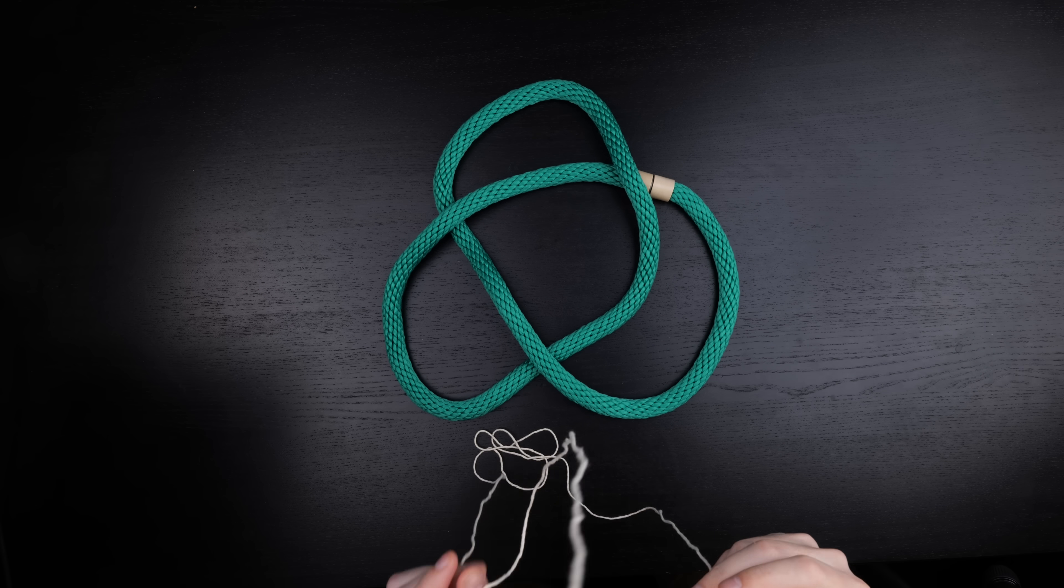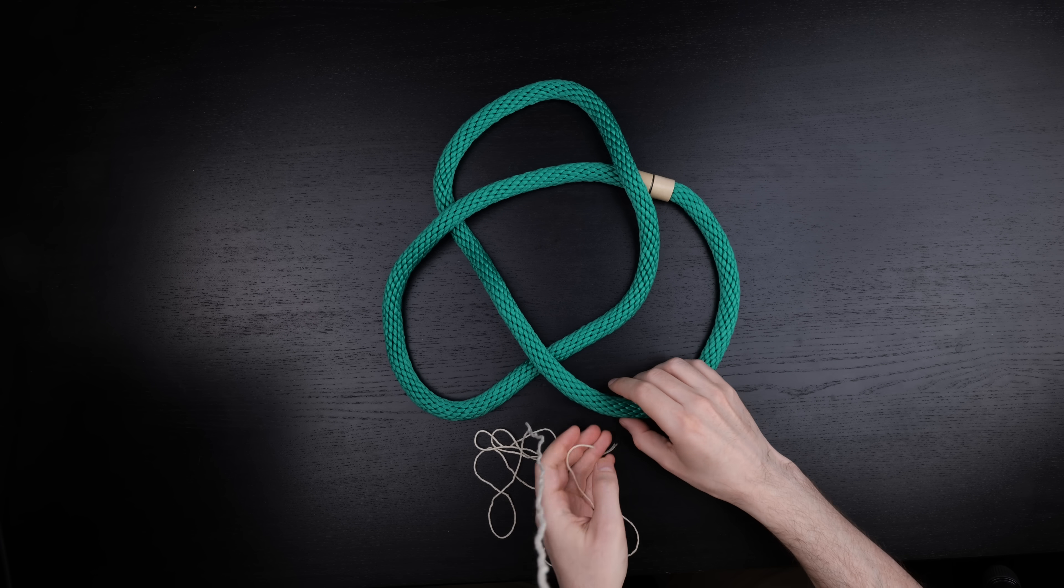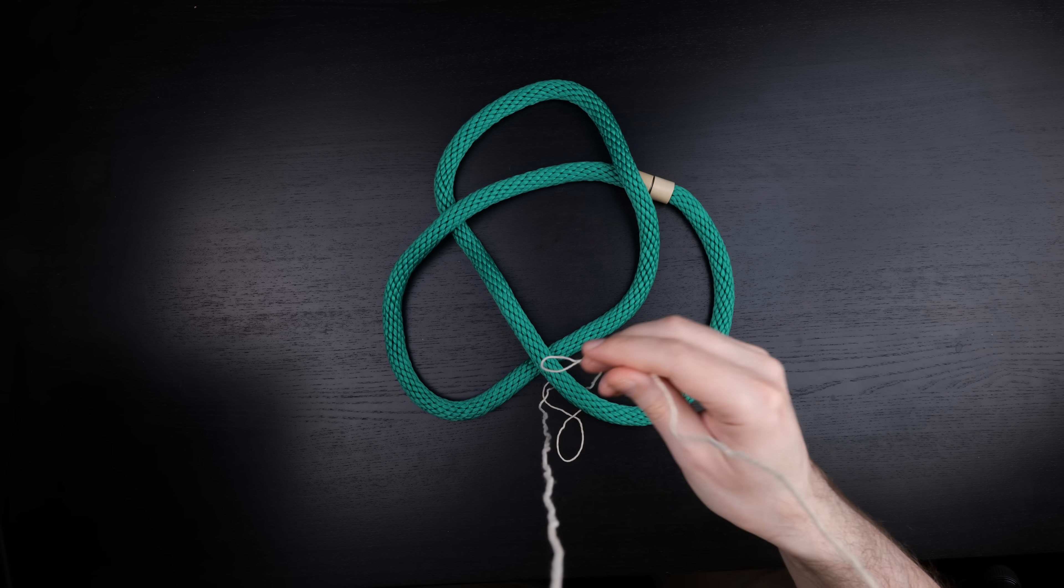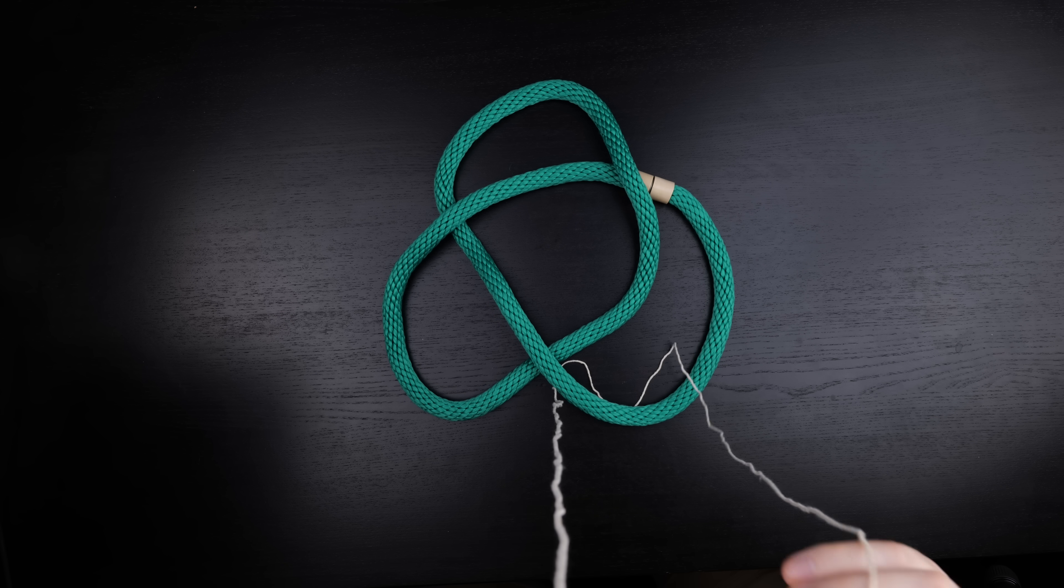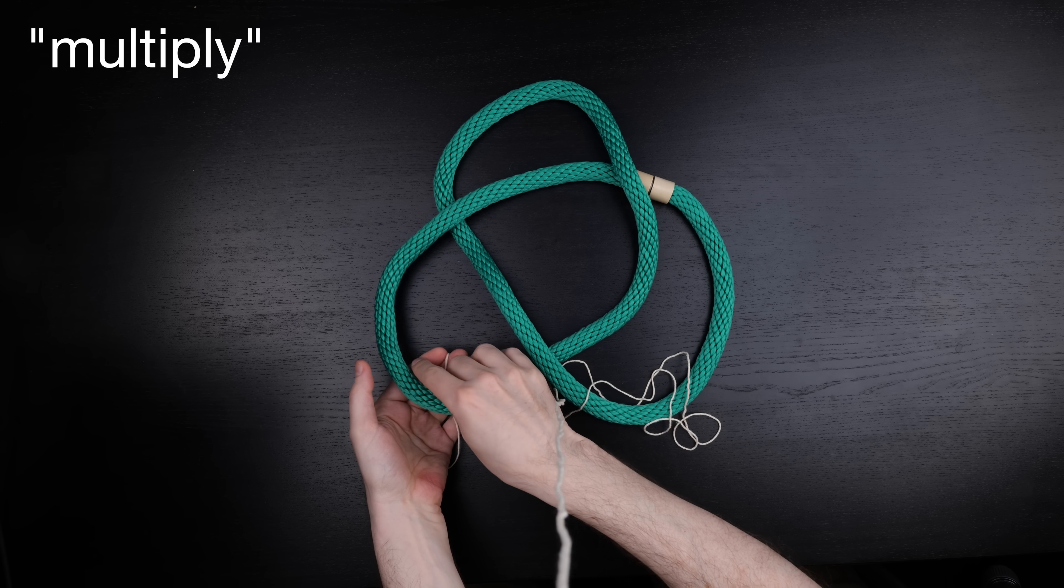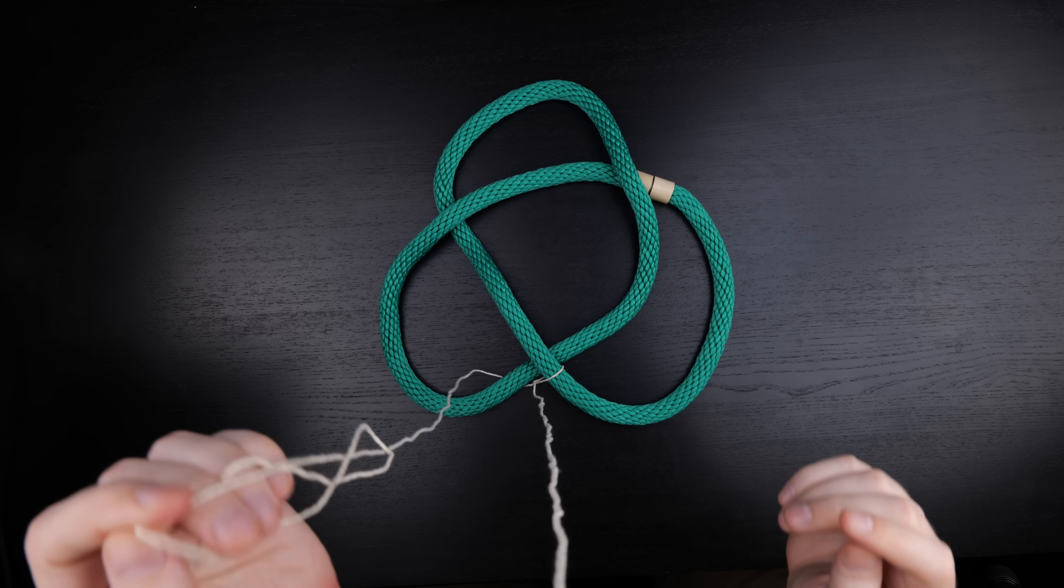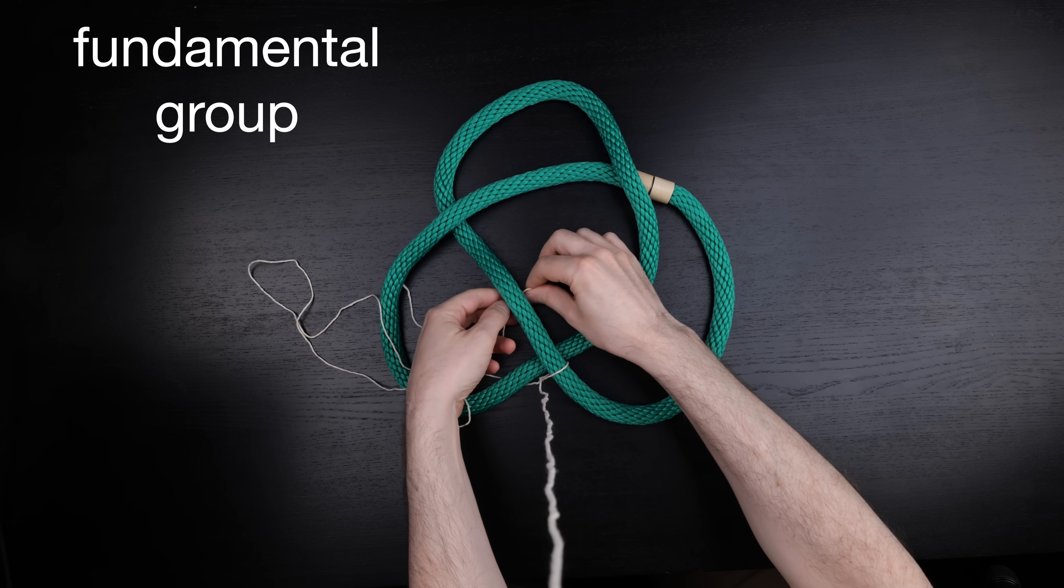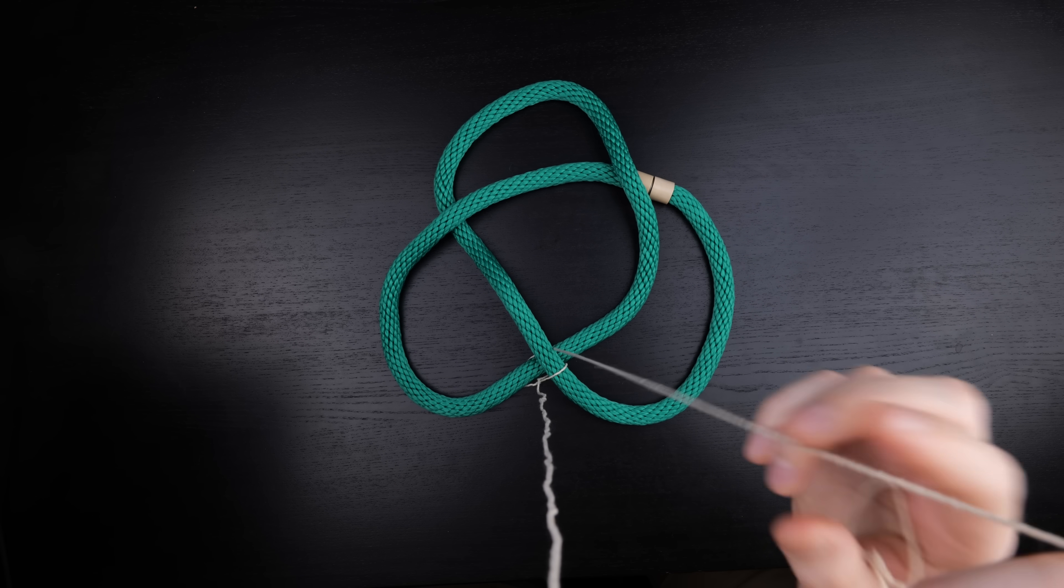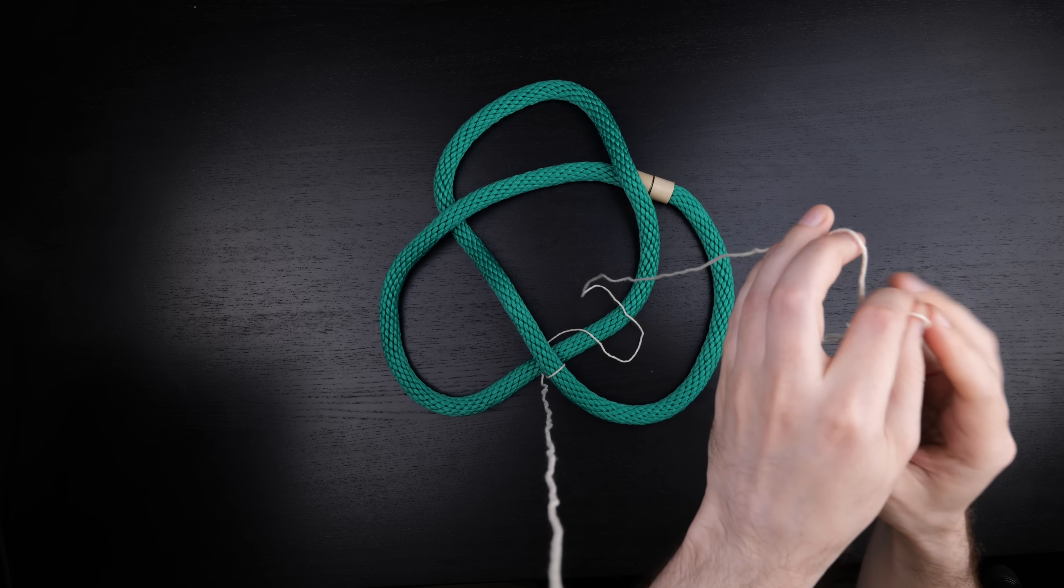But there's another, more technical way to think about tri-colourability. Rather than colouring the strands, you think about the loops that go around the strands back to some fixed base point. You can multiply loops together just by doing them one after another, and it turns out that these loops form a group called the fundamental group of the complement of the knot.